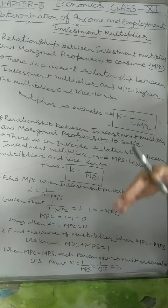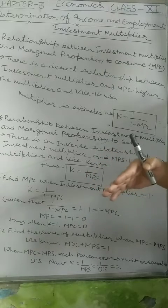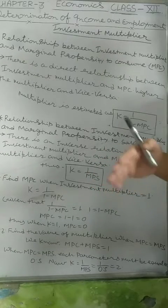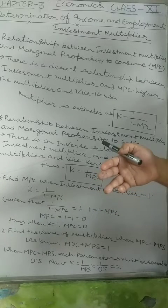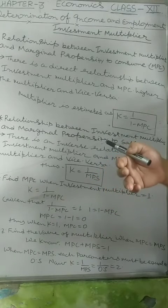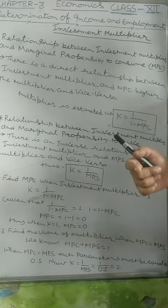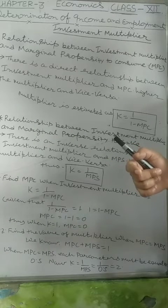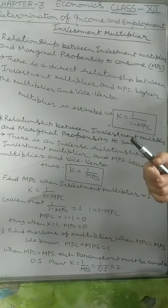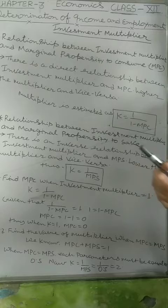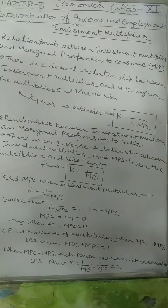The value of multiplier is the number of times by which the initial investment gets changed in the form of income. Marginal propensity to consume and marginal propensity to save both play a crucial and pivotal role in the investment multiplier process, its function, and its result. Today we analyze the relationship between investment multiplier and marginal propensity to consume.